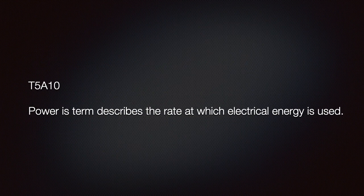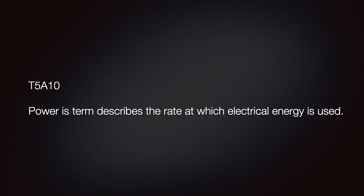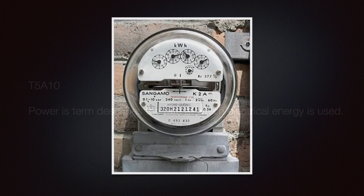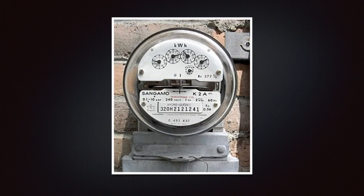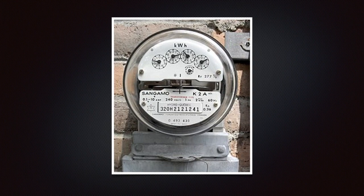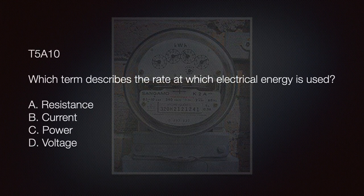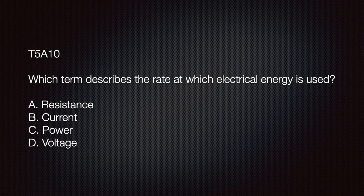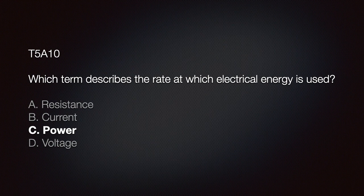It would behoove you to know that power is a term that describes the rate at which electrical energy is used. Most everyone is familiar with this power meter. It can be found on the outside of most buildings and houses everywhere. Our test question is this. Which term describes the rate at which electrical energy is used? Resistance, current, power or voltage? The correct answer is C, power.